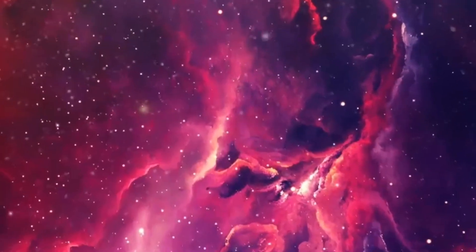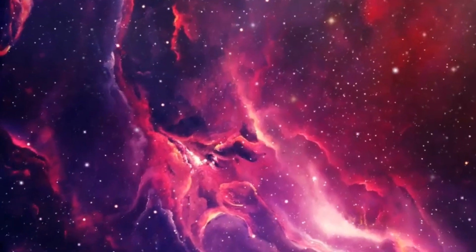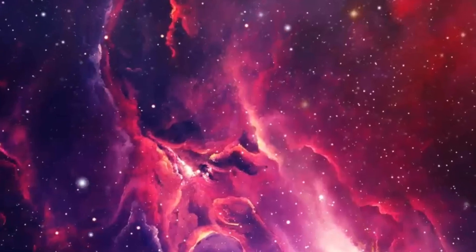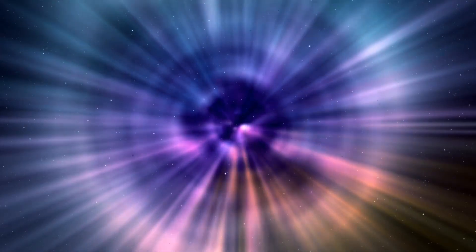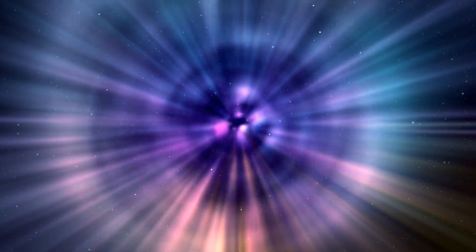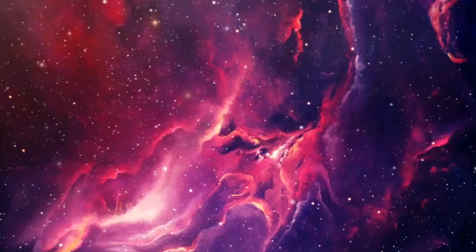The solar system once had five giant gaseous planets rather than the four it has today. That's the conclusion from a computer simulation of the solar system's evolution, which suggests the fifth giant was hurled into interstellar space some four billion years ago after a violent encounter with Jupiter.